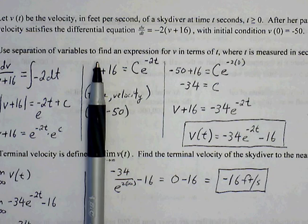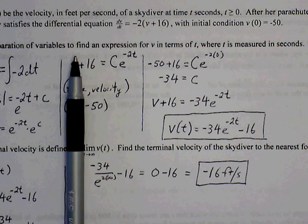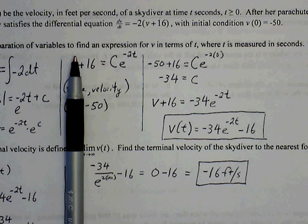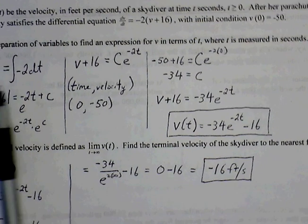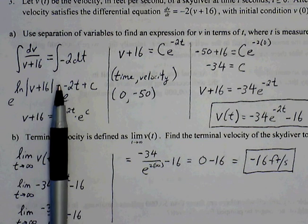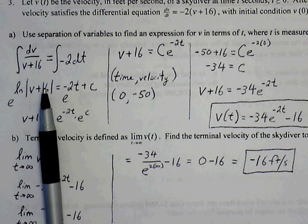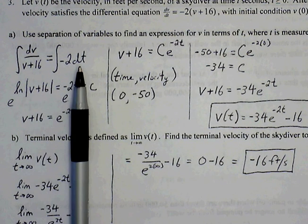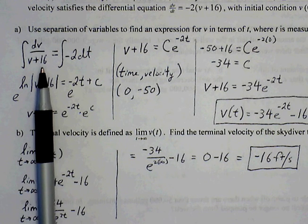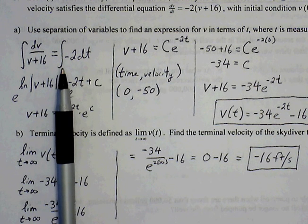So part A, use separation of variables to find an expression for v in terms of t, where t is measured in seconds. So we want to write a particular equation, but first we're going to separate the variables. So let's get v on the left side and everything else on the right. So our dependent variable will be the velocity v, and our independent will be the time, so we have that on the right side.